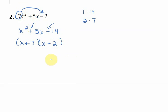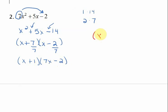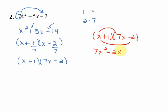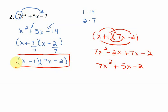Now we divide by what we multiplied by in the beginning — divide both terms by 7. That gives me x plus 1. Since 2 over 7 won't reduce to a whole number, we take that denominator and slide it back in front of the x, giving 7x minus 2. Checking by multiplying back together: I get 7x squared minus 2x plus 7x minus 2, and combining like terms gives 7x squared plus 5x minus 2, which is what I started with. So this is the correct factorization.